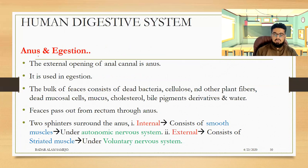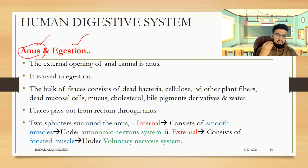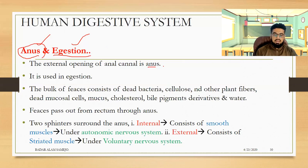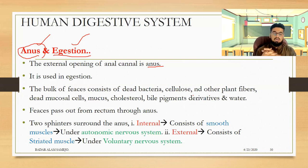The final opening of the alimentary canal is the anus, whose function is defecation. The bulk of feces consists of dead bacteria, cellulose and other plant fibers, dead mucosal cells, mucus, cholesterol, bile pigments and their derivatives, and water. This entire mixture is called feces.